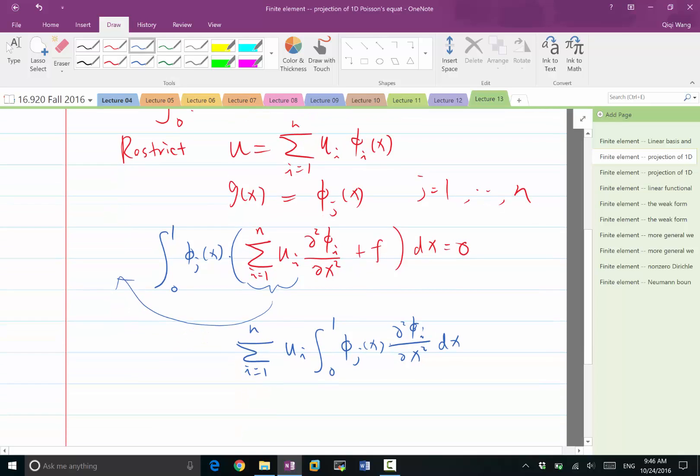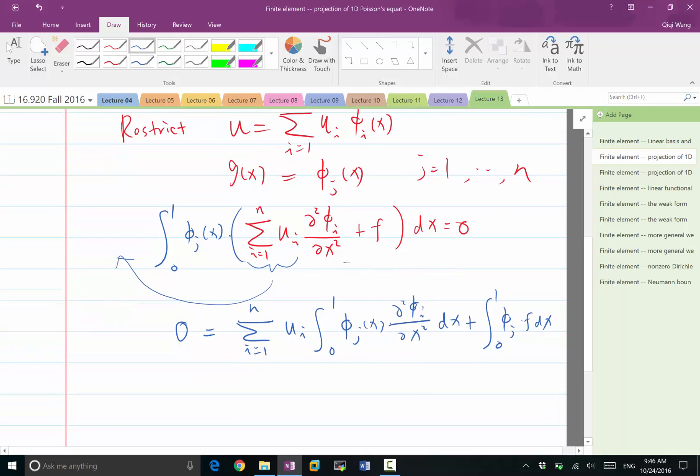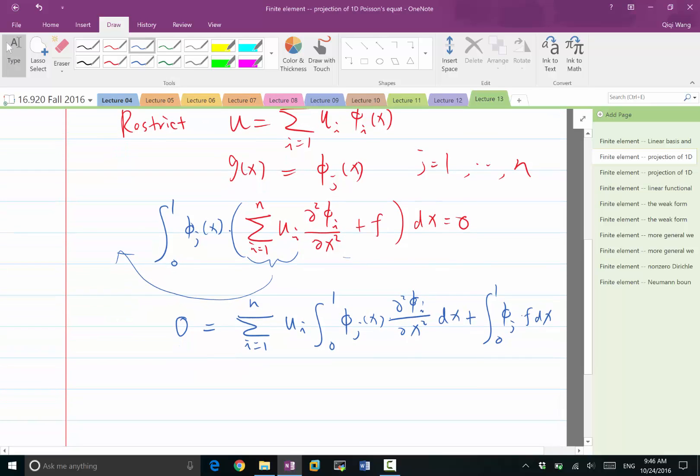This is the first term, and the second term is phi j times f, so plus phi j times f dx has to be equal to 0. The difference between this equation and the equation we derived last time was that the phi i has been taken a second-order derivative.